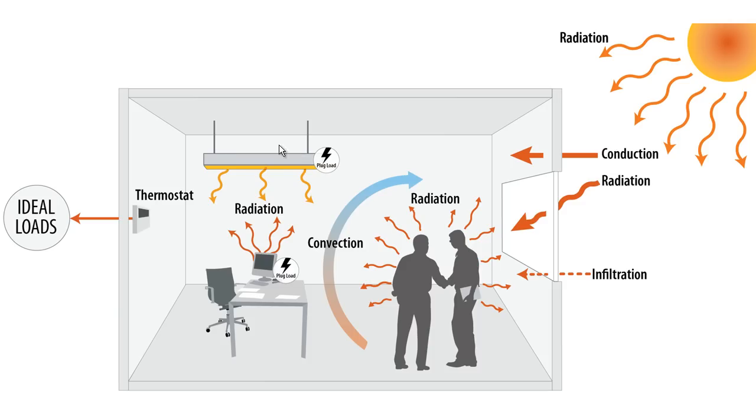So how do we keep a certain temperature in a zone? We put a thermostat on the wall like we have over here. And for basic early design modeling, we use something called an ideal loads air system. What this does is I tell it that I want to maintain 70 degrees in my zone.